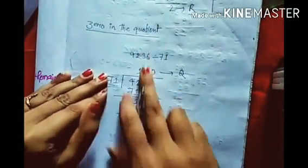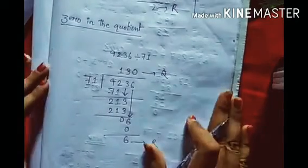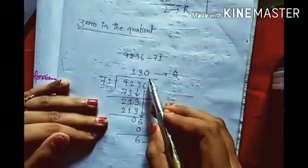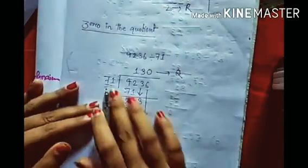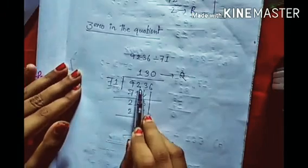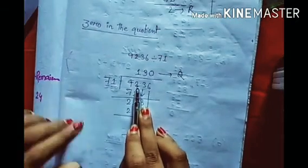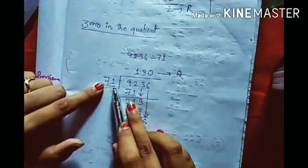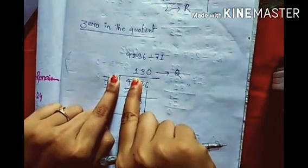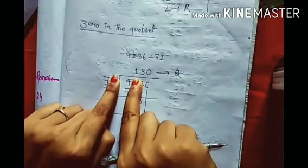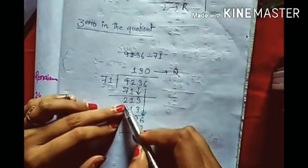Now I will show zero in the quotient - this is very, very important students, so try to listen properly and understand. Zero in the quotient means how we can get zero in our quotient. The example is 9236 divided by 71. The first step: 92 versus 71 - 92 is greater so we can consider two digits. Two times 71 is more than 92, so we consider only one time - 71 times 1 is 71. Remainder after subtraction is 21.